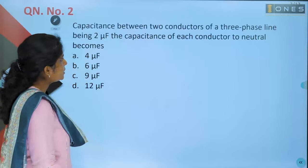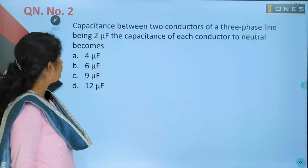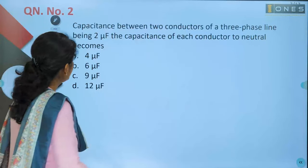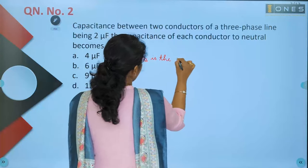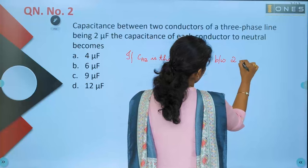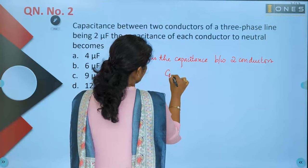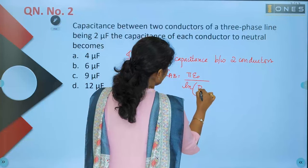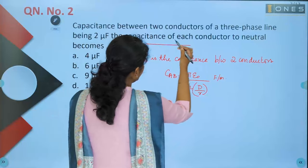Second question: the capacitance between two conductors of a three-phase line is two microfarads. What is the capacitance of each conductor to neutral? The capacitance C_AB between two conductors is given by pi epsilon zero divided by ln(d/r) farad per meter. Now, if the capacitance of each conductor to neutral or the midpoint is taken...